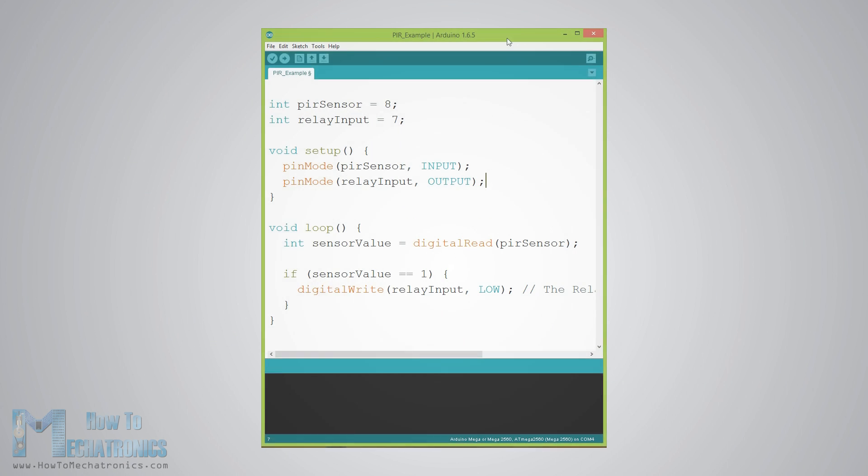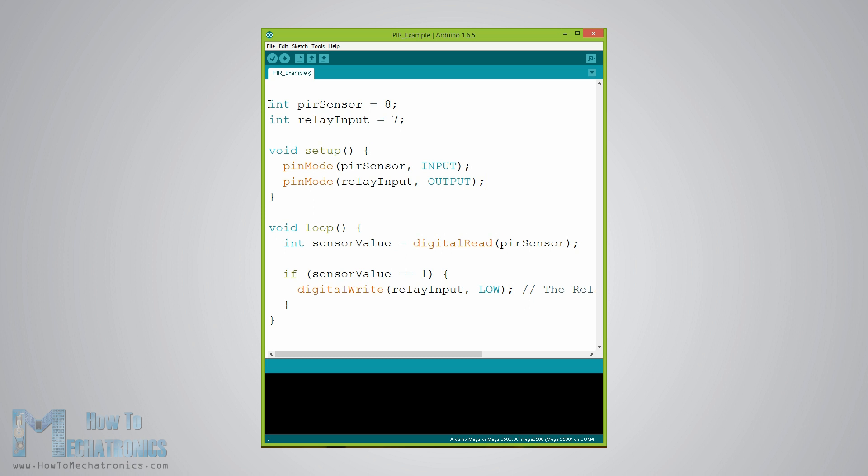Here's the Arduino code for this example. It's quite simple, we just need to define the PIR sensor pin as input and the relay pin as output.